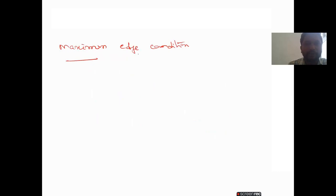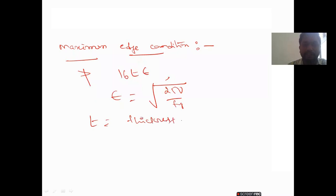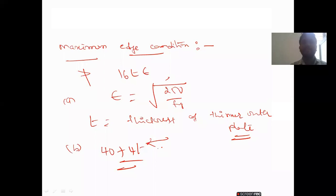The maximum edge condition: it shall not exceed 16T·ε, where ε is the square root of (250/Fy) and T is the thickness of the thinner outer plate. Condition B is 40 plus 4T, where T is the thickness of the connected plate. So this covers both minimum and maximum edge conditions.